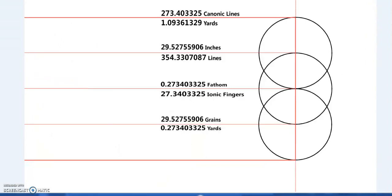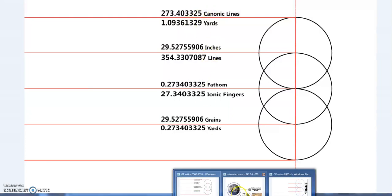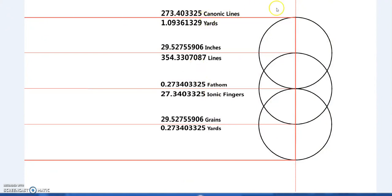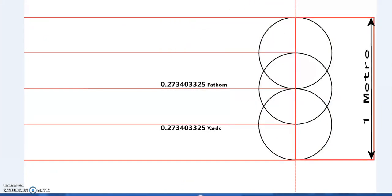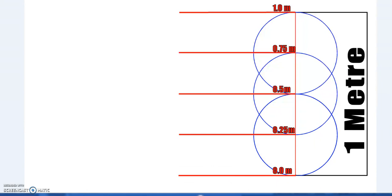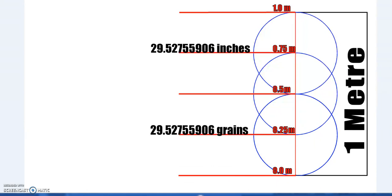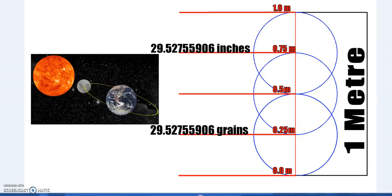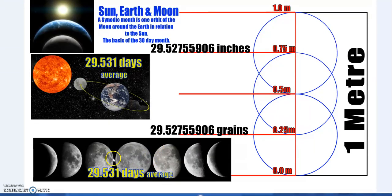So previously I showed this illustration. One meter — you divide it up and you get 29.527 grains or inches. That's the synodic month: the time between full moons is 29.53 days on average. It will pass through 29.527 — the Sun, Earth, and Moon relationship. One synodic month is the orbit of the Moon around the Earth in relation to the Sun.